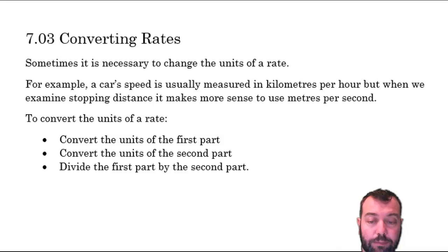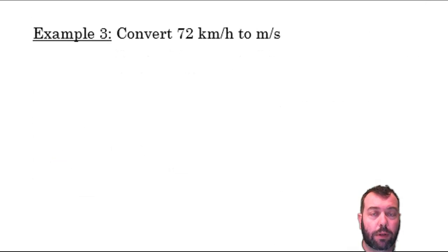Then finally we divide the first part by the second part that generates our new rate. So three steps to this: convert the units of the first part, convert the units of the second part, and then divide the first part by the second part.